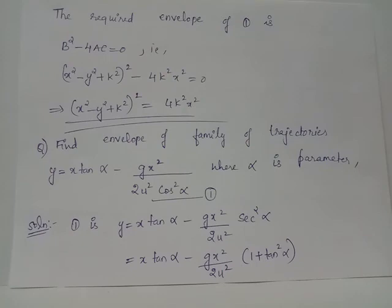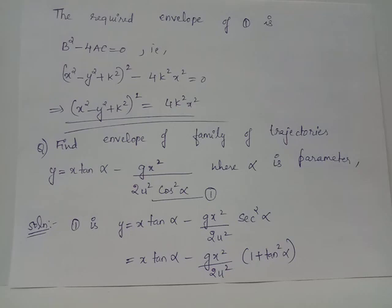Thus, the required envelope for the given family of curves is obtained by b² - 4ac = 0, which gives (x² - y² + k²)² - 4k²x² = 0, or equivalently (x² - y² + k²)² = 4k²x². This expression, independent of the parameter α, is the required envelope.